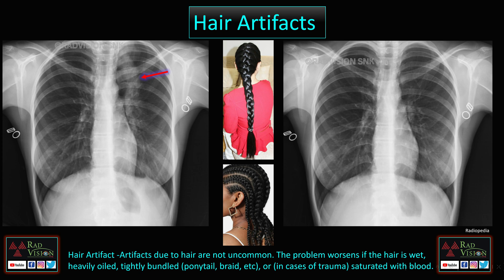Next case: here you can see a long elongated hair braid which mimics a lesion, but after removing the hair braid the lesion disappears — this is a pseudo lesion. Hair braids, ponytails, and hairstyles can mimic pseudo lesions. Artifacts from hair are more prominent when the hair is wet, heavily oiled, or tightly bundled, and in trauma cases where it is saturated with blood or foreign bodies.